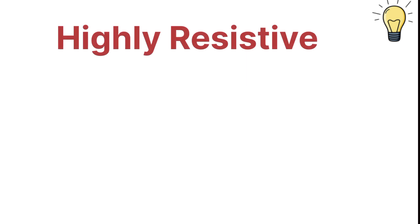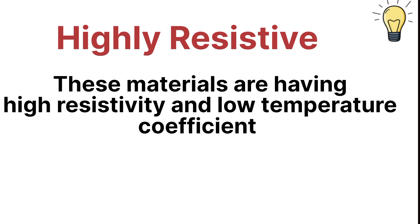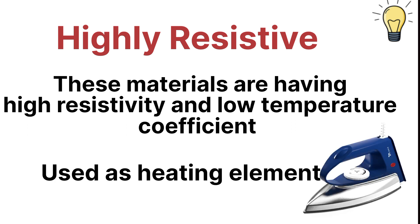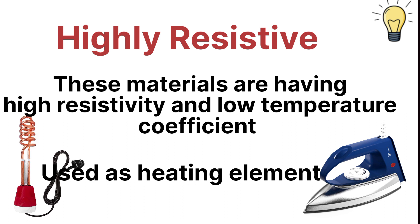Highly resistive materials generally have high resistivity and low temperature coefficient. These materials are used for heating purposes, such as heating elements like electric irons and water heater rods. These materials are made of alloys — meaning a mixture of two or more elements together. So these are the conducting materials, their types, and their applications.